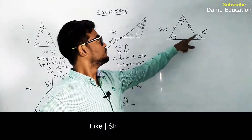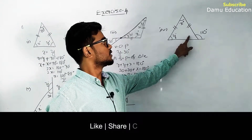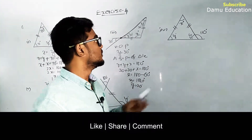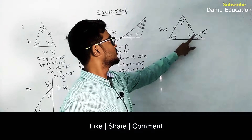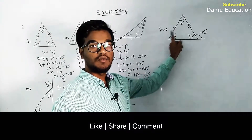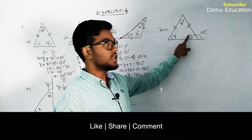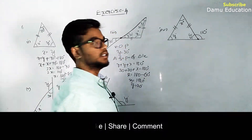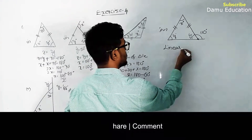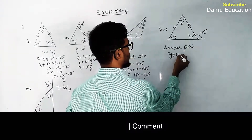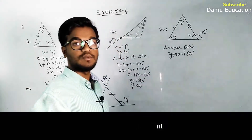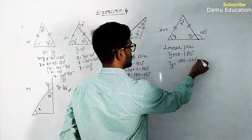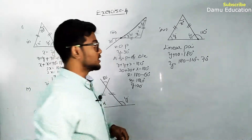For the fourth question, two sides are equal so the two base angles are both y°. Given an exterior angle of 110°. Using the linear pair: y + 110 = 180°, so y = 180 - 110 = 70°.